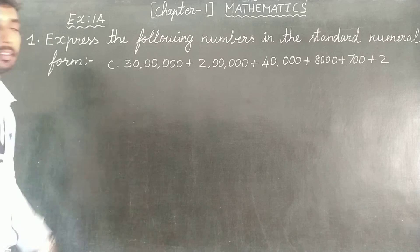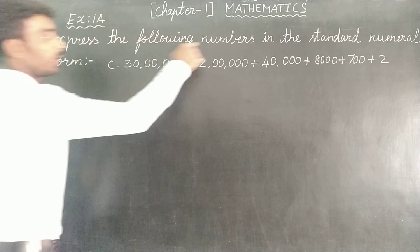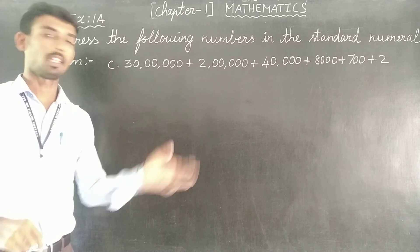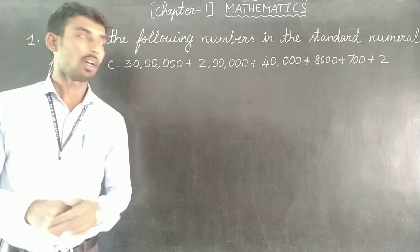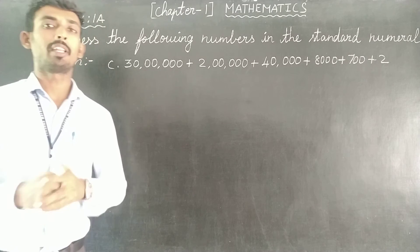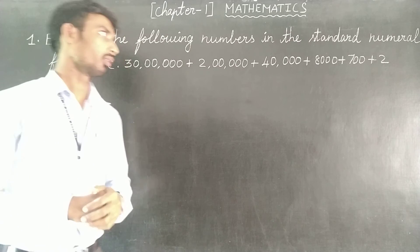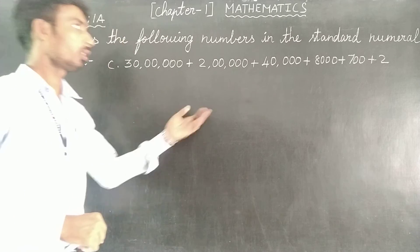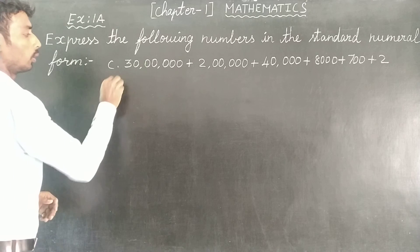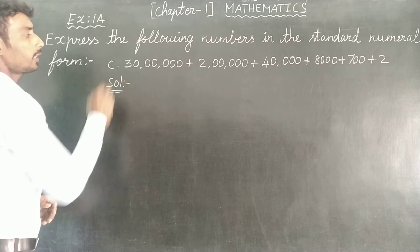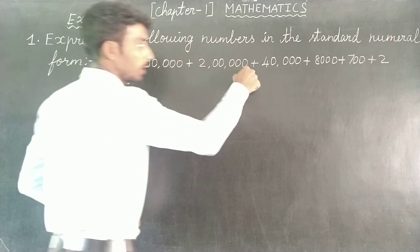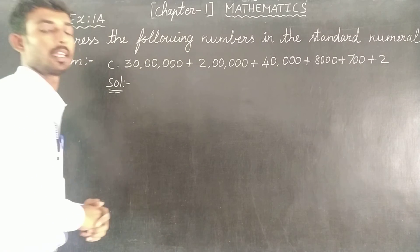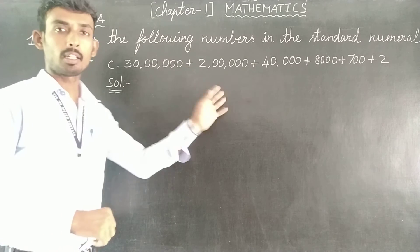First sum is C. So we are going to write the following numbers in the standard numeral form. We are going to change the form numbers into standard numeral form. Solution.